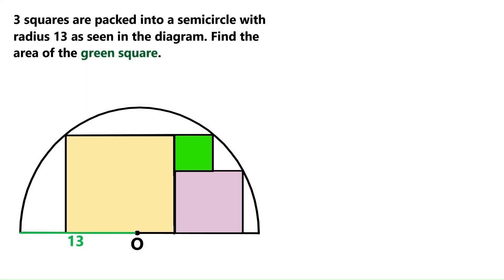In this extremely cool geometry problem, we've got this semicircle with a radius of 13. And these three squares are tightly packed inside a semicircle like this. And we've got to find the area of this small green square over here.